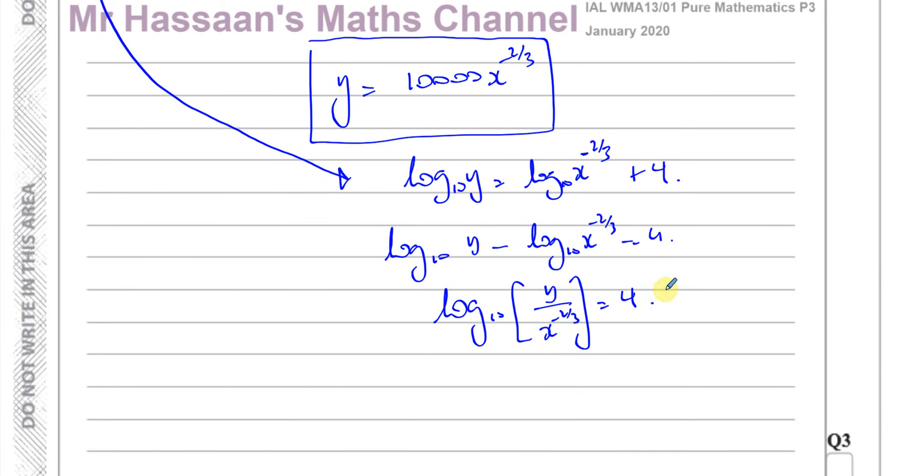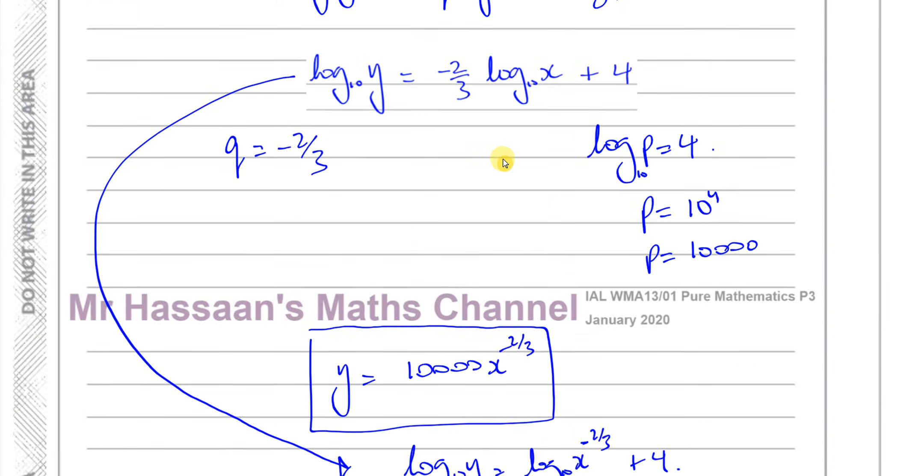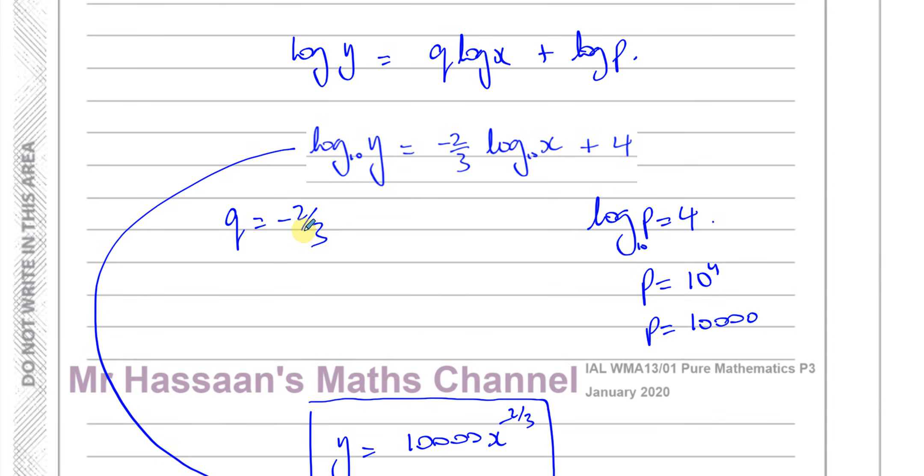So, then we could just rewrite this in index form. This is 10 to the power of 4 equals this. So, y over x to the power of minus 2 thirds equals 10 to the power of 4. So, you end up with y equals 10 to the power of 4, which is 10,000 x to the power of minus 2 thirds. So, that's another way of doing it by taking what we found earlier and rewriting it in basically exponent form.